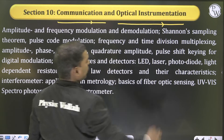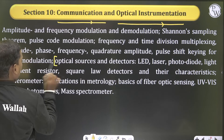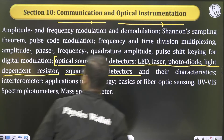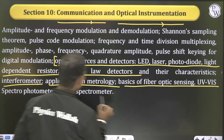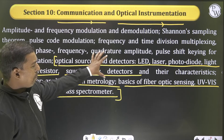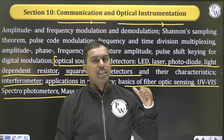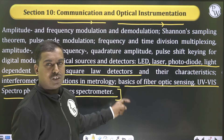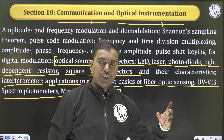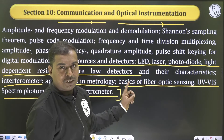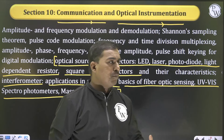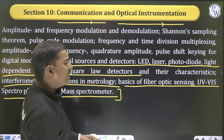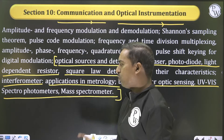Optical instrumentation is another subject where, while communication is common, optical instrumentation differs. For ECE students, the extra topics are: optical sources and detectors including LED, laser, photodiode, and light-dependent resistor; square-law detectors and their characteristics; interferometers and applications; metrology; basics of fiber optic sensing; UV-visible spectrophotometers; and mass spectrometers. In Gate 2022, six marks came from optical instrumentation, so its weightage is increasing. Most topics on lasers, LED, photodiodes, and fiber optics are already known to ECE students from their B.Tech fiber optic communication subject.